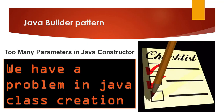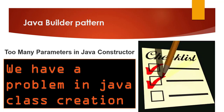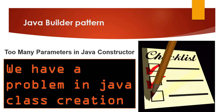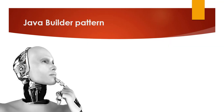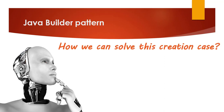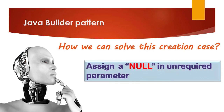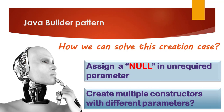How can we solve it? We have a creation problem in Java class creation. We can solve this by assigning null to unrequired parameters — if we have many parameters we don't use, we can assign a null value. Another option is to create multiple constructors with different parameters, but this is not good practice. Let's think about how to use the Builder pattern to solve our problem.